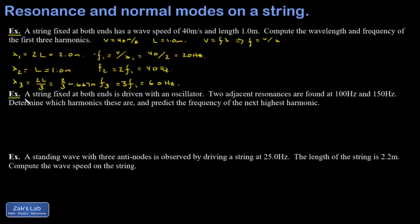A string fixed at both ends is driven with an oscillator. Two adjacent resonances are found at 100 hertz and 150 hertz. In other words, there was no resonance in between. We investigated very thoroughly, but we found one resonance at 100 hertz and the next one at 150 hertz.